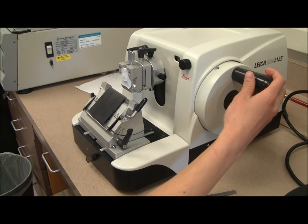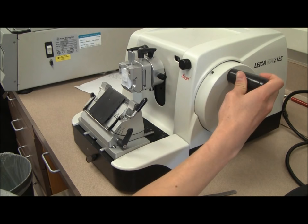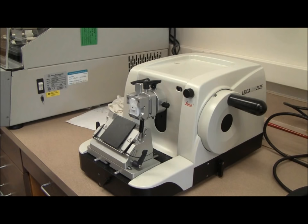The hand wheel on the right side is used to move your block downward across the blade. In order for the wheel to be turned, the safety knob must be turned downward and the handle pulled outward. Make sure to push the handle back in each time you finish using the microtome.